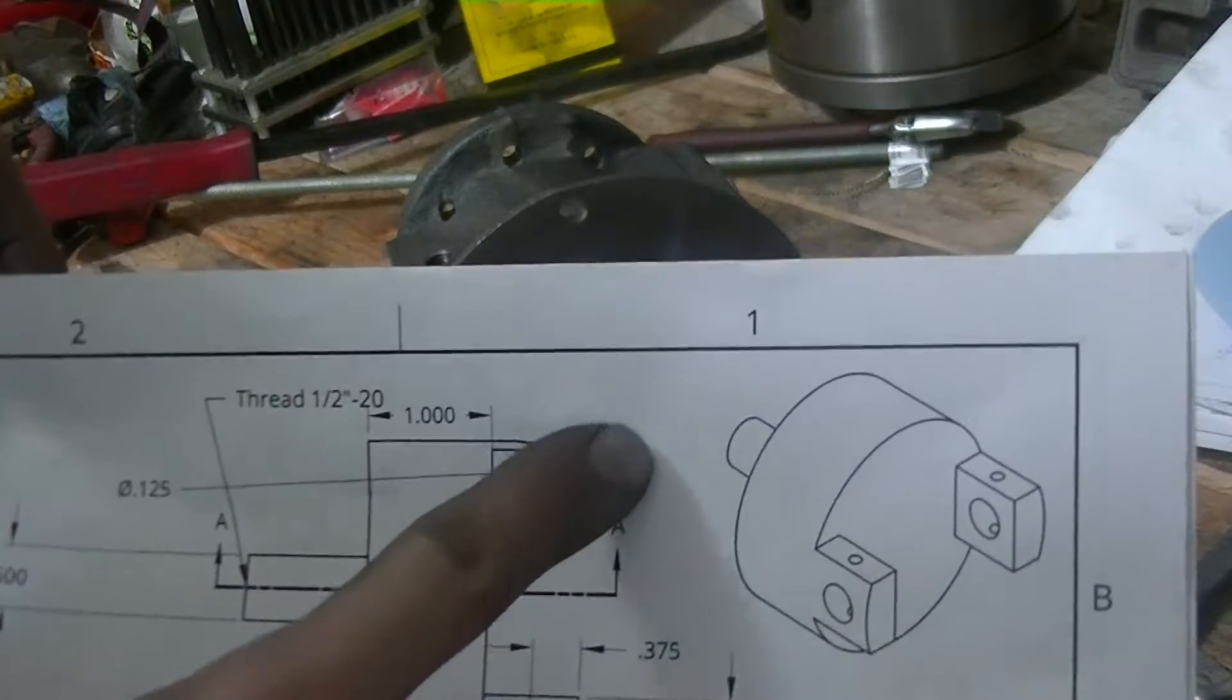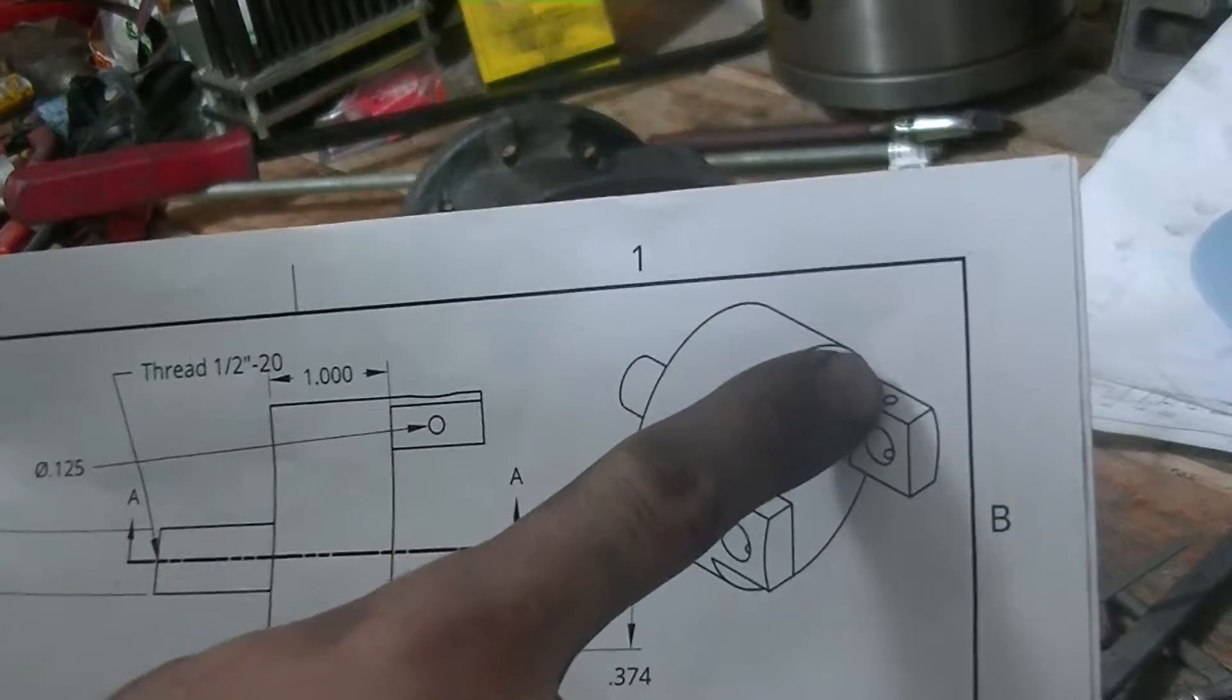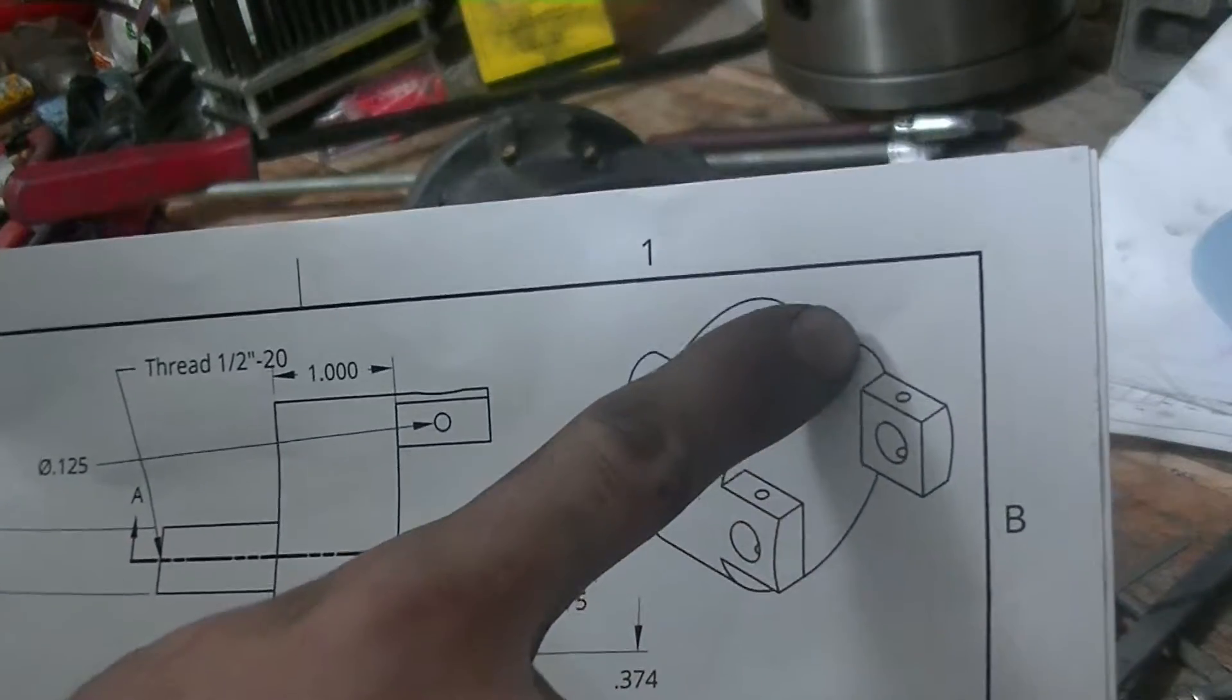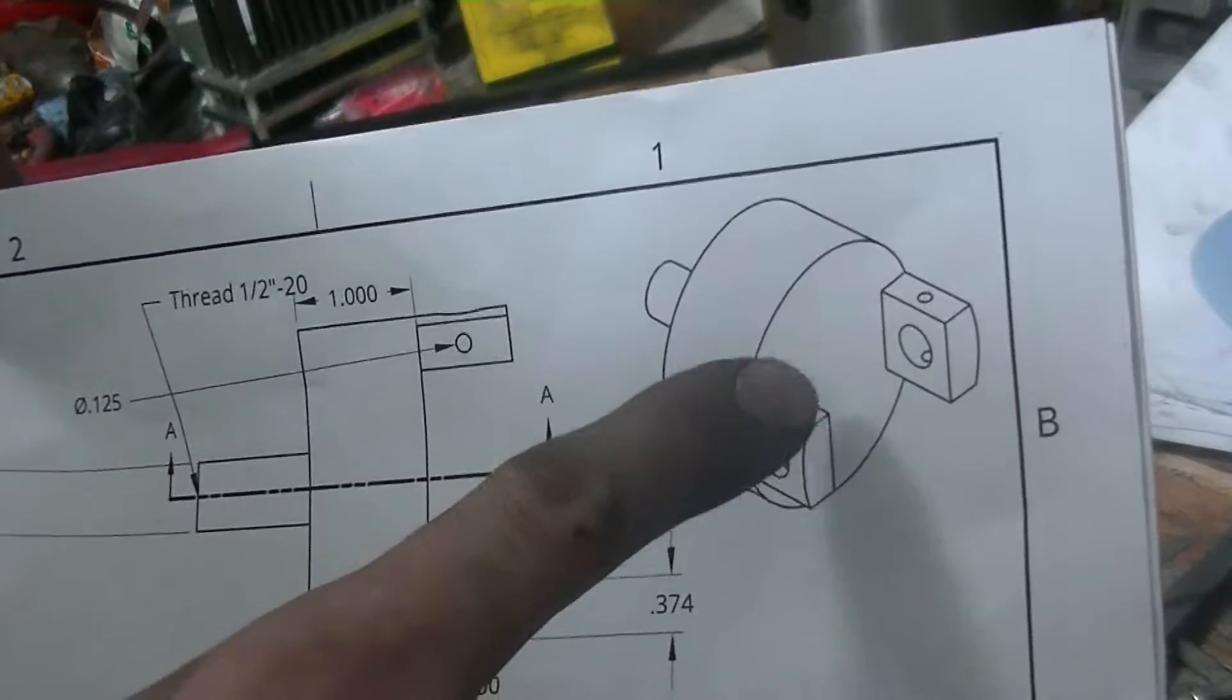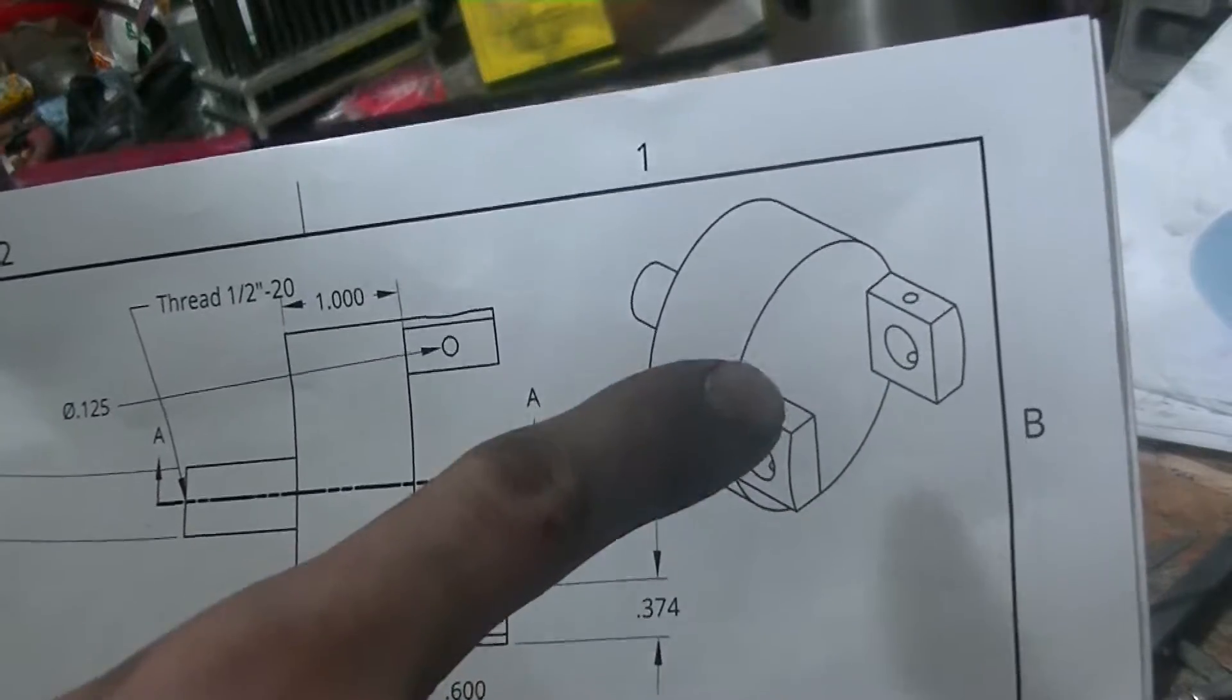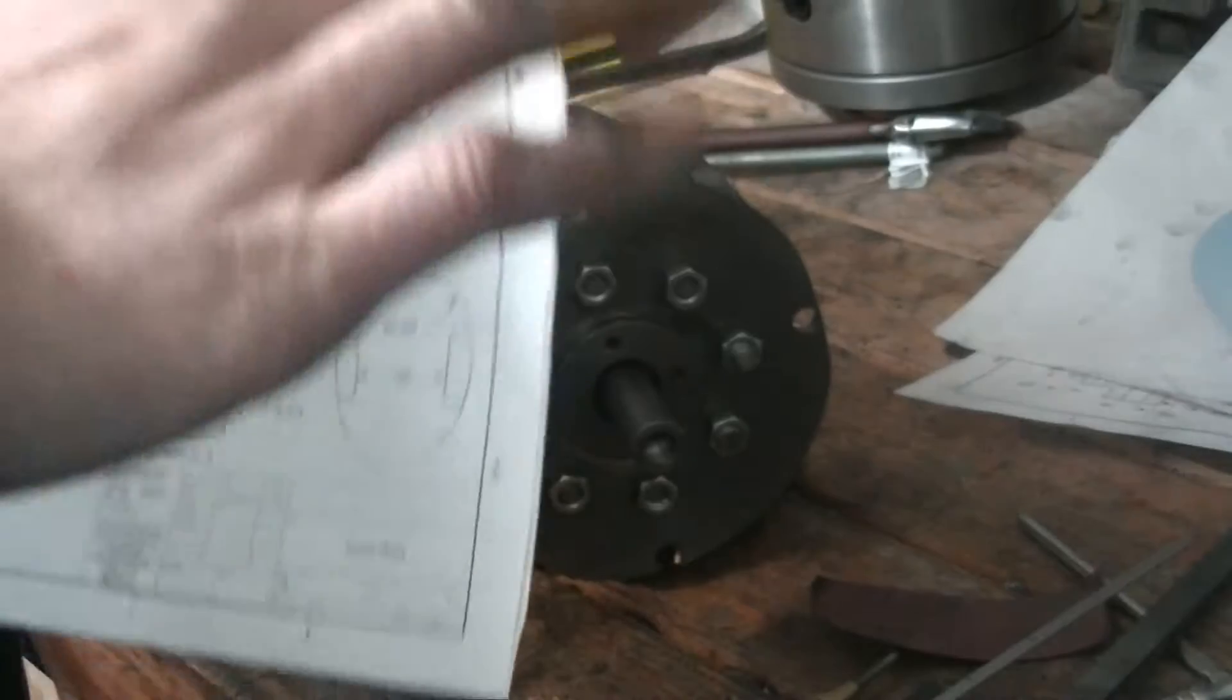Here's the drawing. So it kind of looks like that. That part right there is threaded and a pin will go through here that will connect the connecting rod, and that's where the connecting rod will articulate.